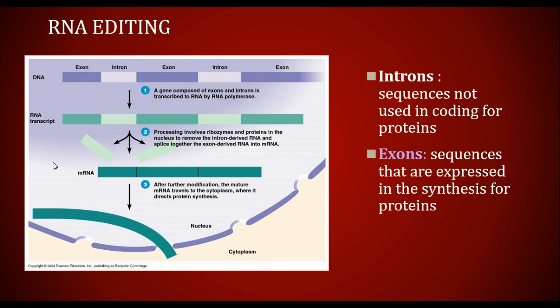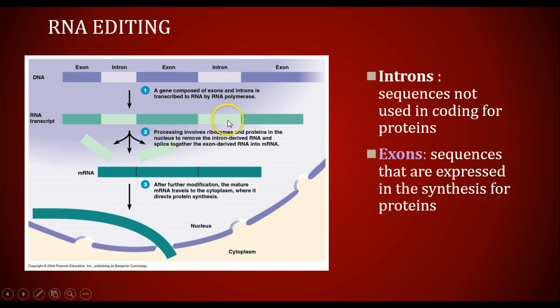Introns are sequences that are not used for coding a protein, so they are what I call fluff — they're not needed nucleotides. The exons are sequences that are expressed in the synthesis of protein making, and these are the things that we want to keep.